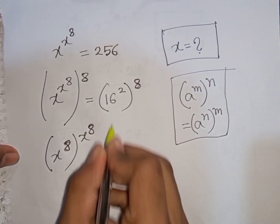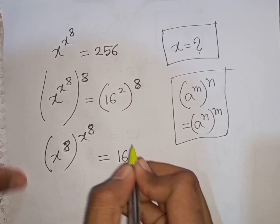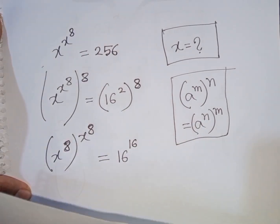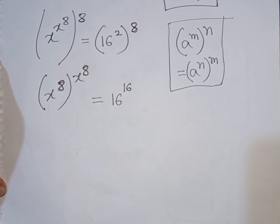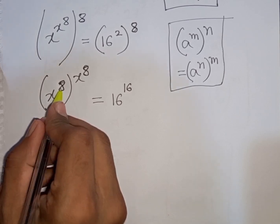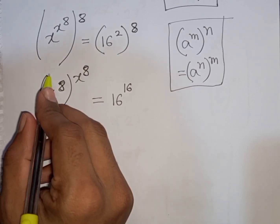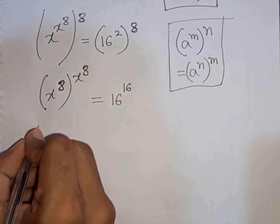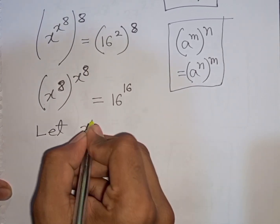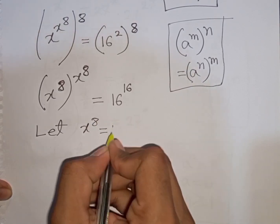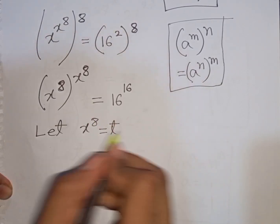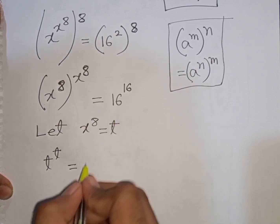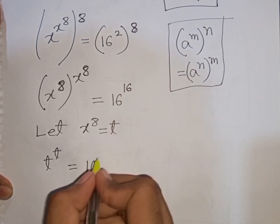So it will be x power 8, then bracket power of x to the power 8. Then x equals 16 power of 2 times 8, that means 16. Now we see x power 8 — both terms are the same. This base and this power are the same, so let x power 8 be substituted by t.